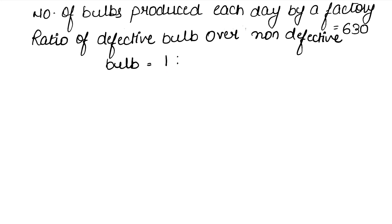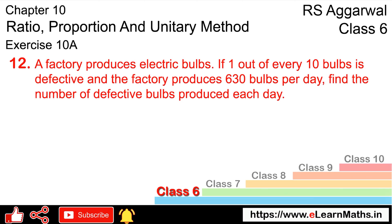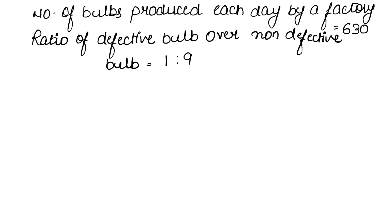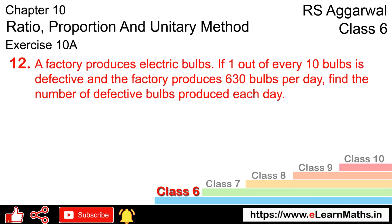The ratio of defective to non-defective bulbs is 1 is to 9, because they are saying that one bulb is defective in a total of 10 bulbs. So 1 is defective and 9 are non-defective. That is why we have written 1 to 9.